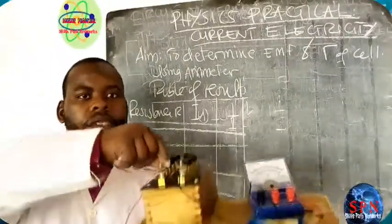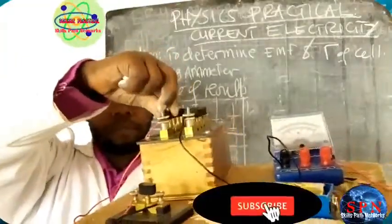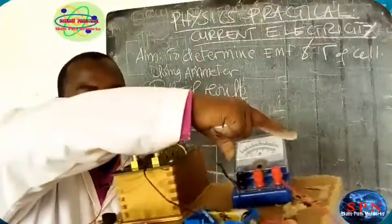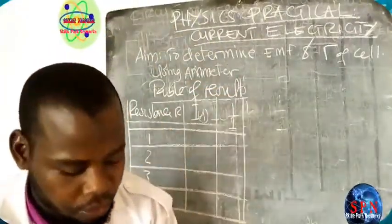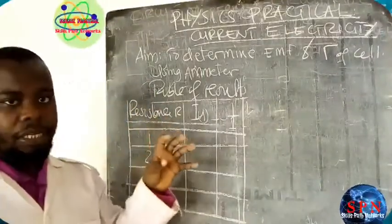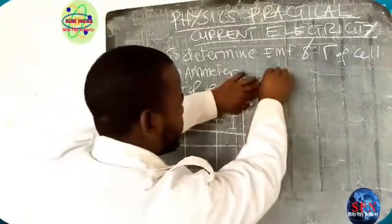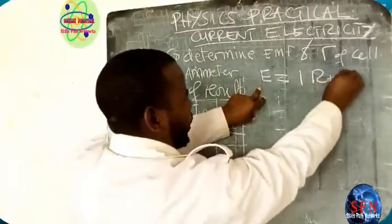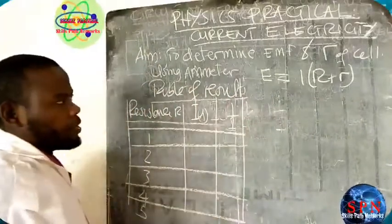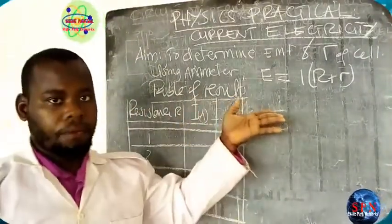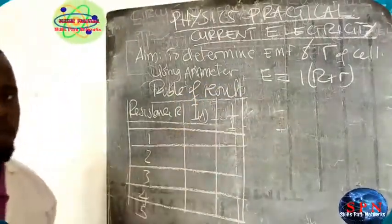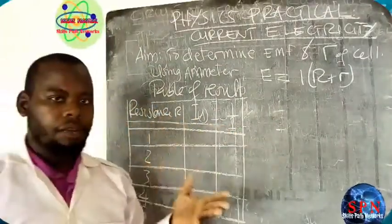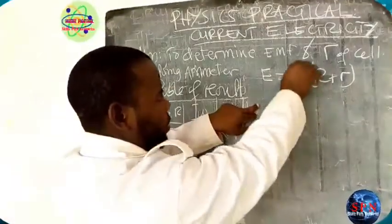When you start with resistance equal to 1, you disconnect the resistor and record the value from your ammeter. This circuit uses the theory that EMF is equal to I times the quantity R plus r, where R is external resistance and r is internal resistance. This is our theory, and we want to find how much current flows using this formula.